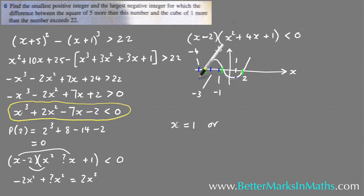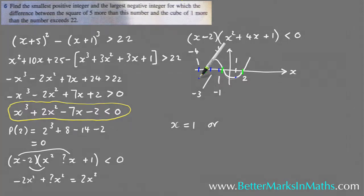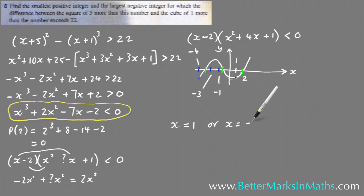For the largest negative integer: on the left portion of the graph all x values are negative and all y values are also negative. As you go further left the x values get smaller. At x = -4, the y value is negative. Since the intercept between -4 and -3 is a decimal, x = -4 is the largest whole negative integer value where the y value is still negative, making the original inequality true.